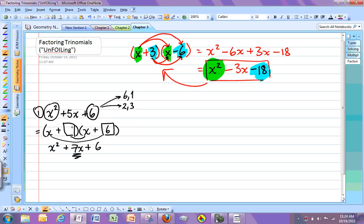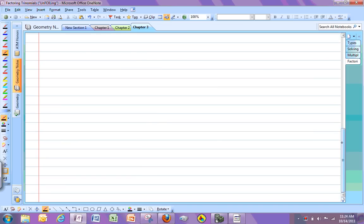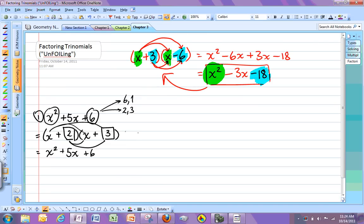So let me try the 2 and the 3 instead. 2 here, 3 here. When I work this out, I'm going to get x squared for the first terms. The outer terms give me 3x and the inner terms give me 2x, so that's 5 total. And then the last terms give me 6. So this right here is the correct answer: x plus 2 times x plus 3.